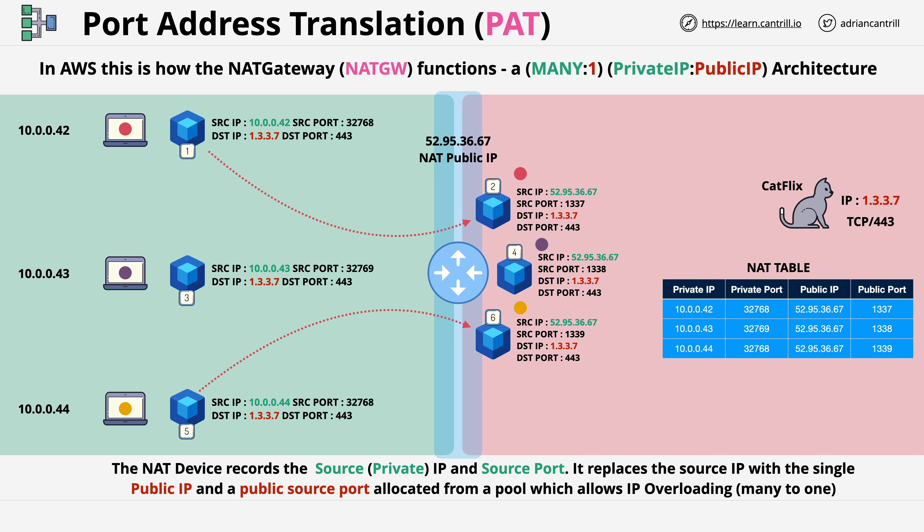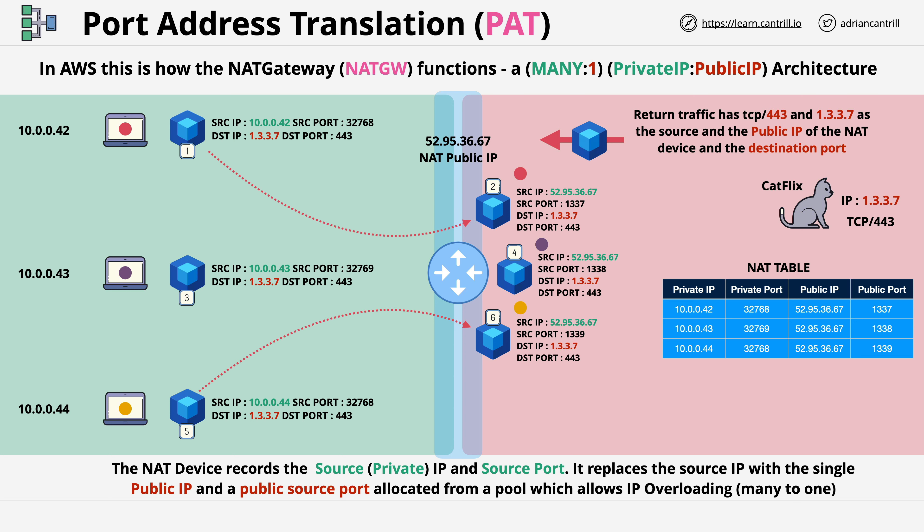This means that when response data comes back, this table can be referenced to ensure that the packet reaches its destination. When return traffic occurs, it will be from TCP port 443, with a source IP address of 1.3.3.7.